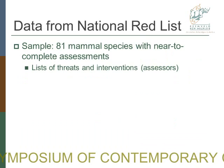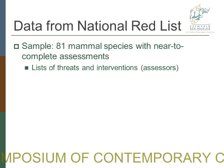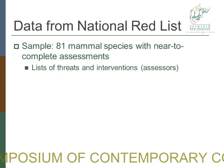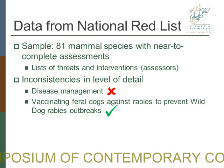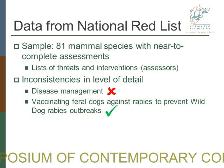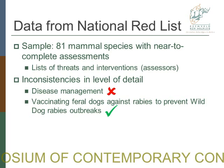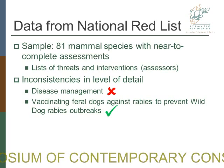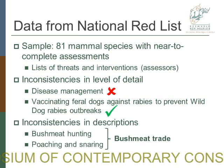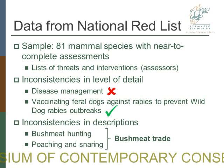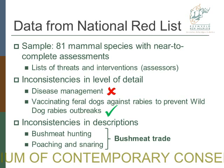We've only got 81 near-to-complete assessments at the moment. From this sample, we took a list of threats and interventions identified by the red list assessors themselves — the species experts working on these species. There were a number of inconsistencies in these threats and interventions: inconsistencies in the level of detail. For example, some assessors will just say that disease management is an intervention — which is very hard to test — whereas vaccinating feral dogs against rabies to prevent wild dog rabies outbreaks is something much more specific that we can actually test. We also had inconsistencies in descriptions, where somebody might say bushmeat hunting is a threat and someone else says poaching, so we clumped things together and called it bushmeat trade.